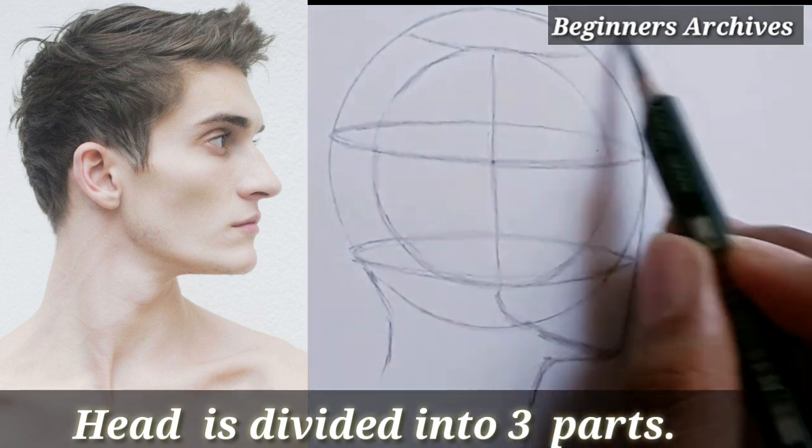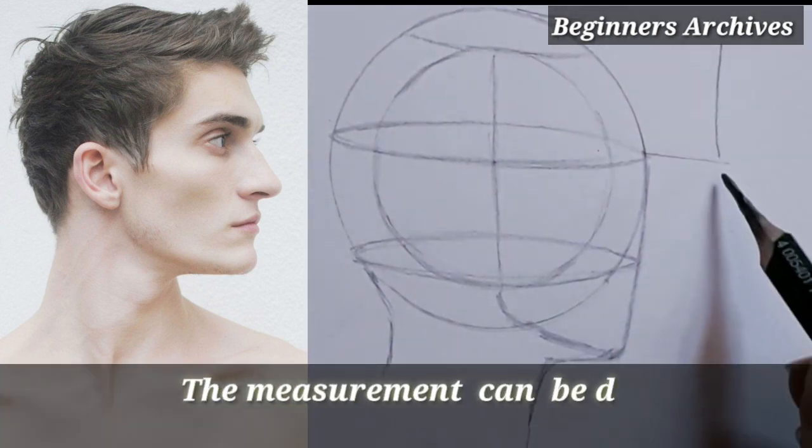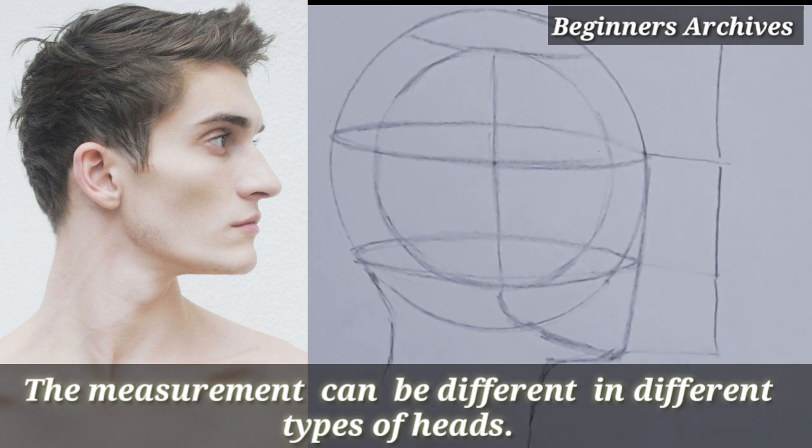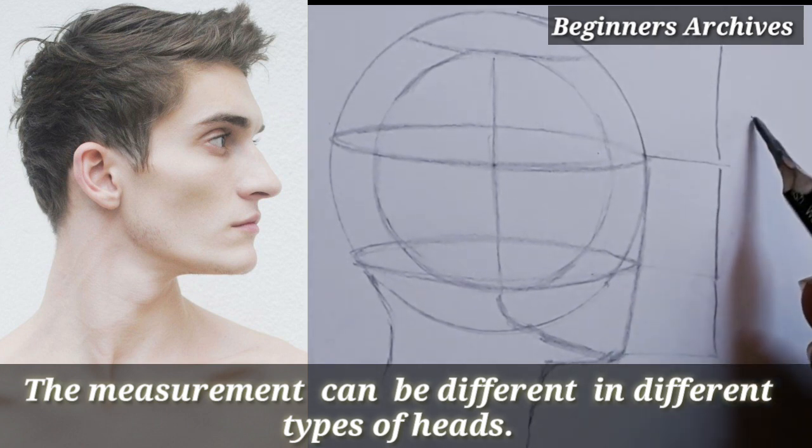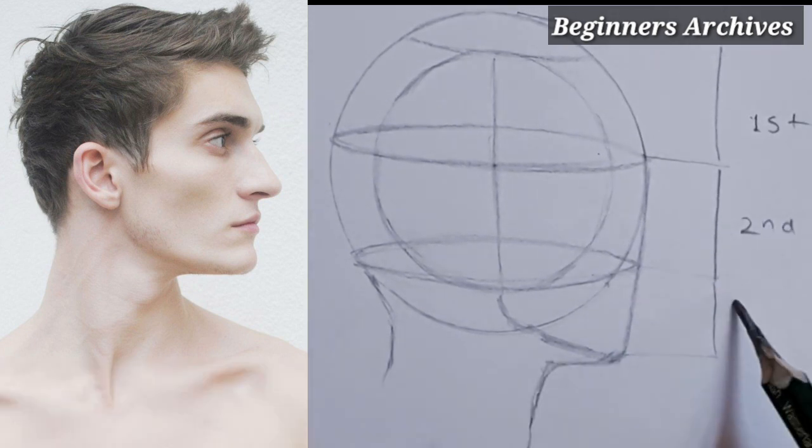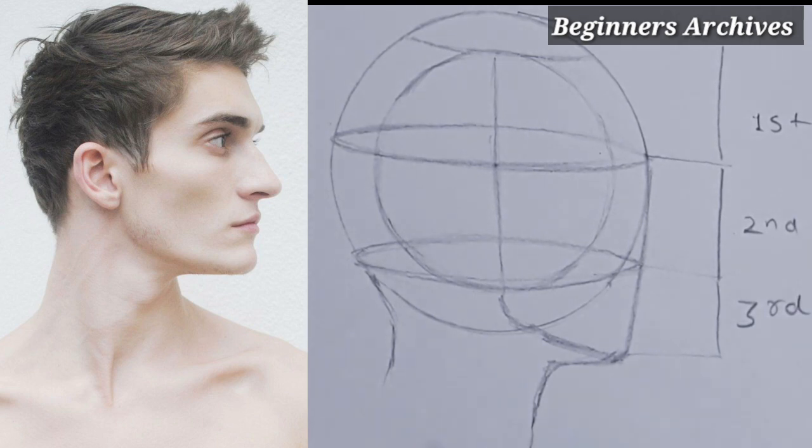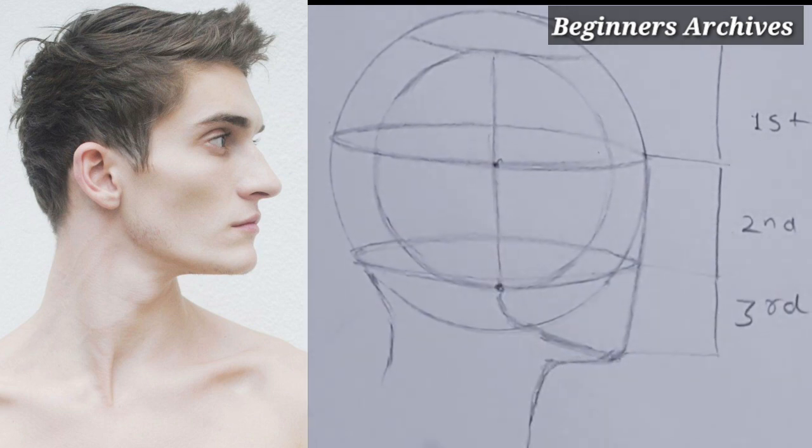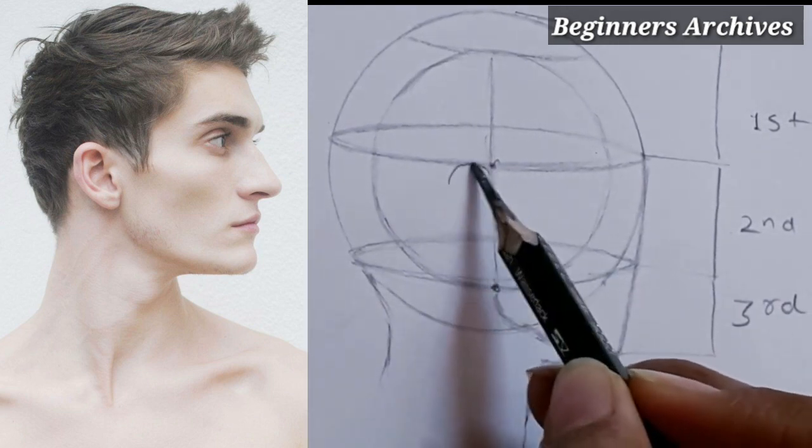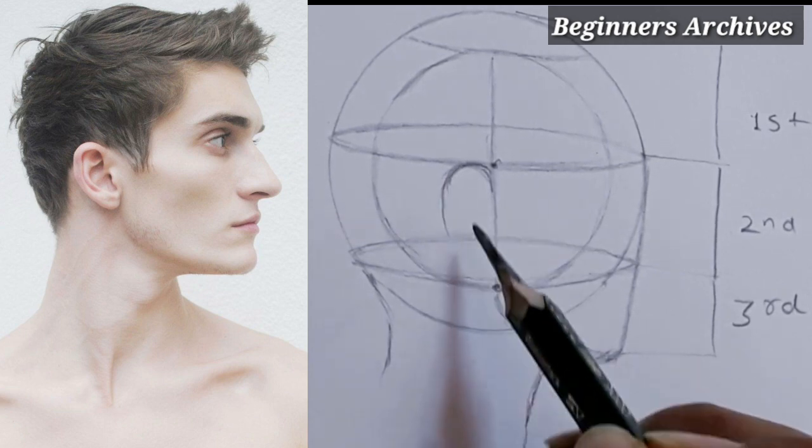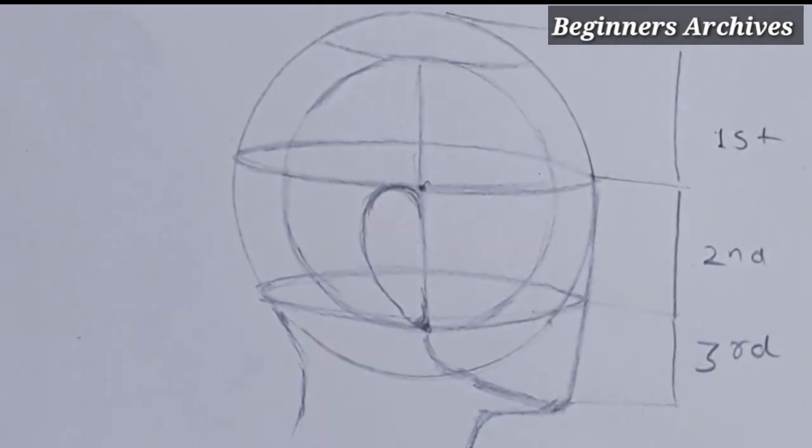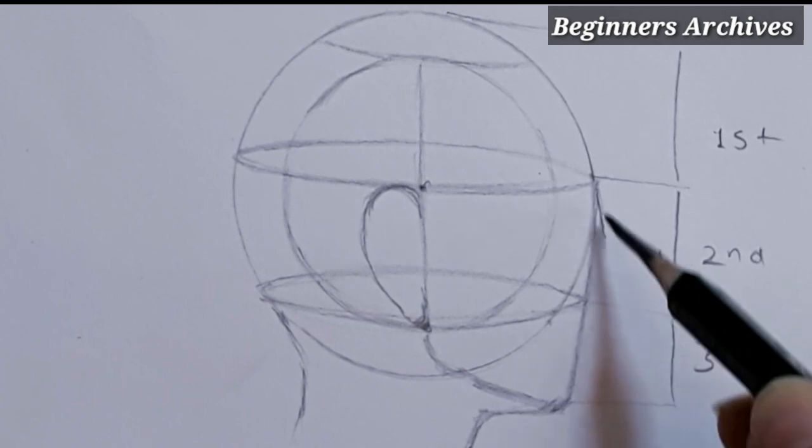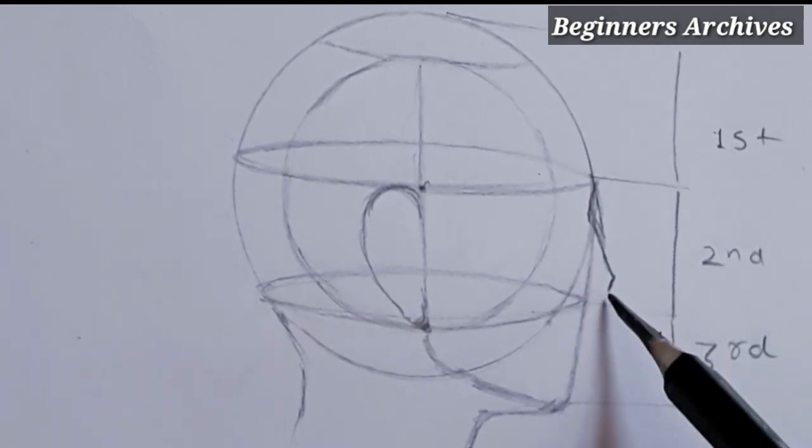We will divide this into three parts. The first part is the hairline to the eyebrows, second is eyebrows to the nose, and third is nose to the chin. It is equally divided in three parts. After that, you can draw the rest of the features. I am showing you examples here.